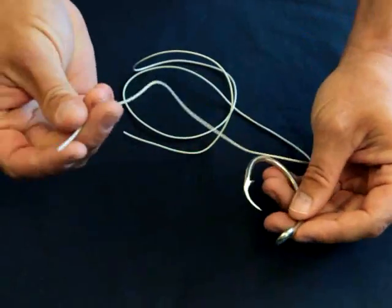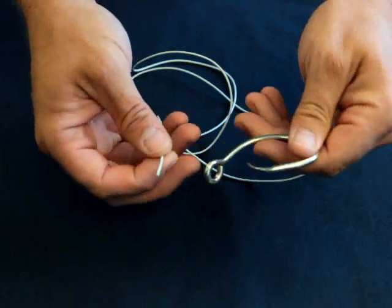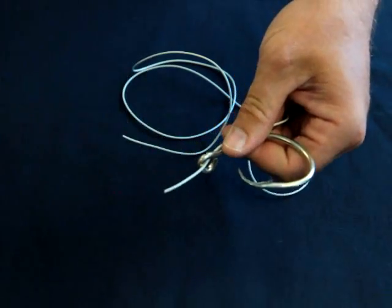First of all, you're going to take one tag end and run it through the actual bottom of the hook, through the eye and away from the hook.